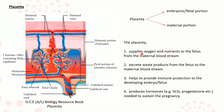The placenta mediates the exchange of materials — such as nutrition, respiratory gases, and metabolic waste — between the embryonic and the mother's circulatory system. The placenta supplies oxygen and nutrition to the fetus from the maternal bloodstream and helps excrete waste products from the fetus. It also provides immune protection to the developing embryo or fetus, and produces hormones like HCG and progesterone, which help to sustain the pregnancy.